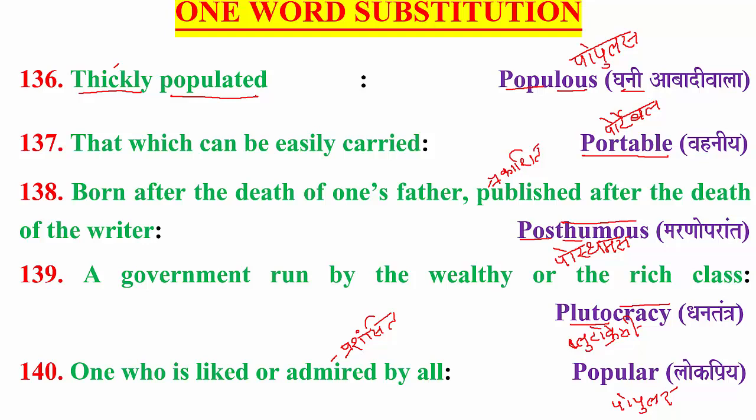Vahani means worthy of being carried — that which we can easily take with us. In English, portable means 'that which can be easily carried'. For example, mobile phones, laptops, etc. — things you can carry in your hand or bag anywhere.